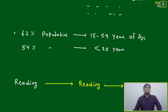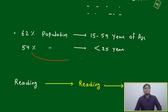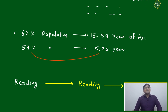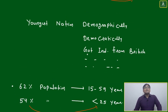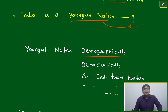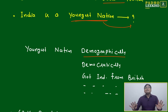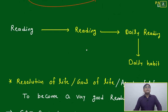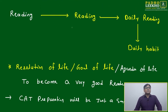Demographically, or got independence from British — in which way? 62 percent of the population are between 15 to 59 years of age. 54 percent of the population are less than 25 years of age. Then if we are saying this, we must add: India is a youngest nation demographically. Then it will be very clear what is the meaning of the sentence.